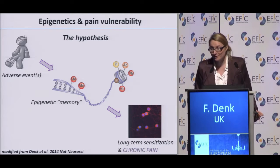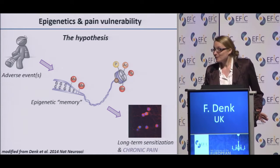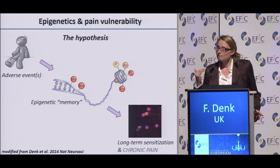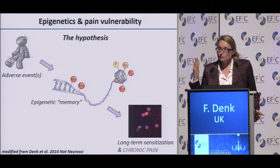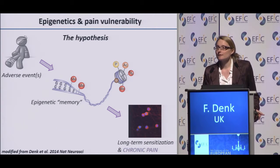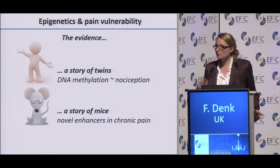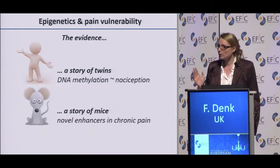Now, that's the hypothesis. What's the evidence? I'm not going to lie — we don't have evidence to support this beautiful causal chain. But we have some evidence beginning to emerge that pain perception is influenced by our epigenome, and also some evidence that chronic pain can change our epigenome. I'm going to talk you through two pieces of evidence: one is a twin study, and one is an animal study.